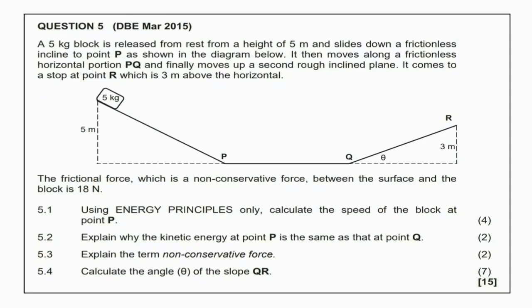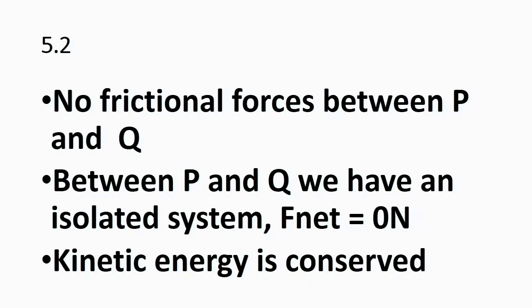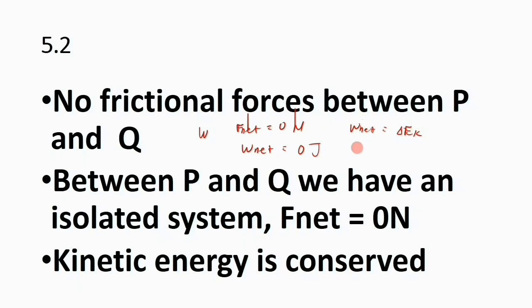Question 5.3: explain why the kinetic energy at point P is the same as at point Q. Between P and Q there are no frictional forces, so we have an isolated system where F_net equals zero newtons. That means W_net equals zero joules. Since W_net equals change in KE, if W_net is zero then EK_final minus EK_initial equals zero, which proves that EK at P equals EK at Q.